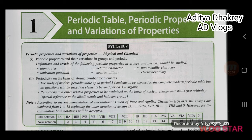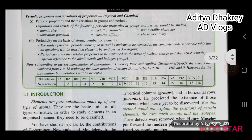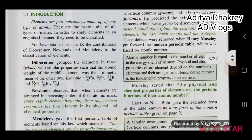In this video we will study the periodic table, periodic properties and variations of properties, Chapter 1 of Chemistry Class 10th ICC board. The first part is introduction. Elements are pure substances made up of one type of atoms. They are the basic units of all types of matter. In order to study elements in an organized manner, they need to be classified.